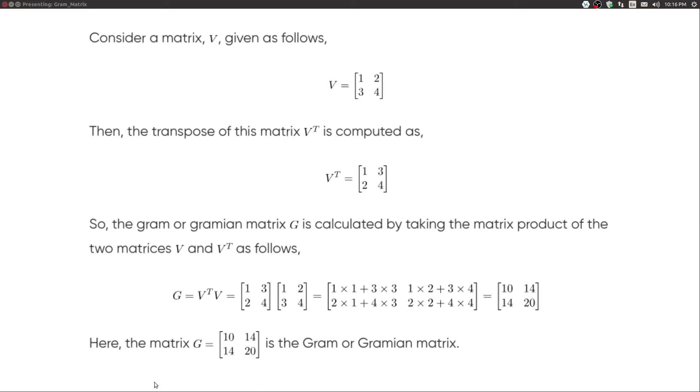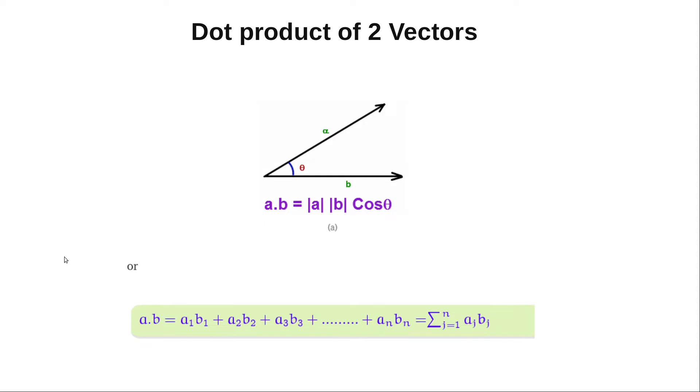The result is [10 14; 14 20], and that's the Gram matrix of these two matrices. But to understand Gram matrix and how they capture the styles of an image, first we need to revisit the concept of dot product of two vectors.